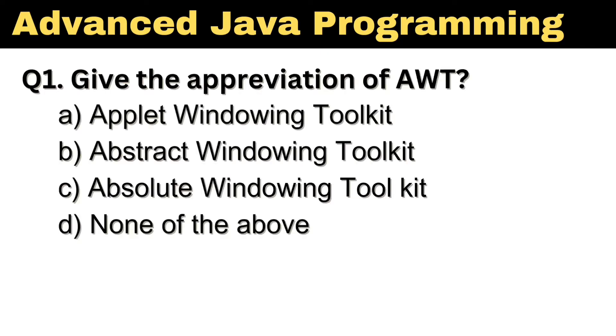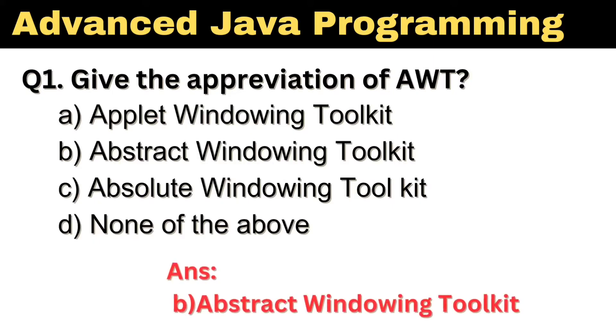Question number 1: Give the abbreviation of AWT. The right answer is Option B: Abstract Windowing Toolkit.